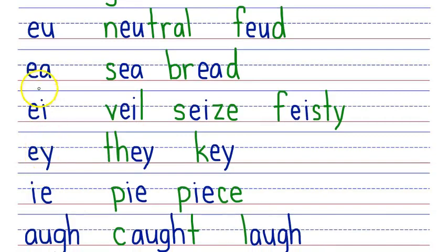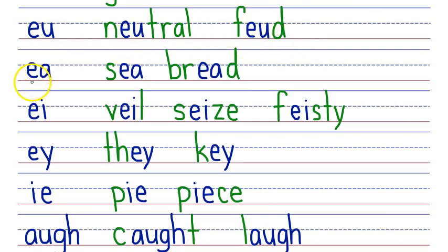You will learn about the EU phonogram that makes two sounds: OO and U. EU says OO as in 'neutral,' and EU says U as in 'feud.' You will learn about the EA phonogram that makes two sounds: E and EH. EA says E as in 'see,' and EA says EH as in 'bread.'